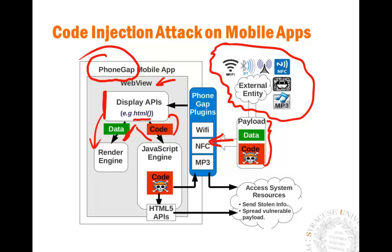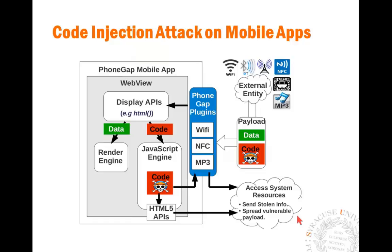Once the code is triggered, it has exactly the same privileges as the code that belongs to the app. So whatever the app can do — for example, if it can dial a phone number — the injected code can do the same thing. The injected code can use all APIs provided by HTML5 and all the plugins, and depending on what permissions the app has, it can do the damage. We have described this attack in full detail in our paper, which is also posted on our website.